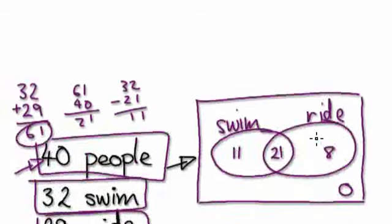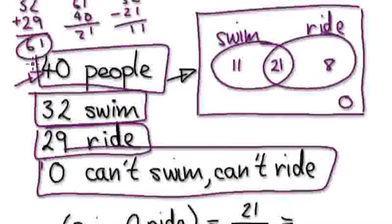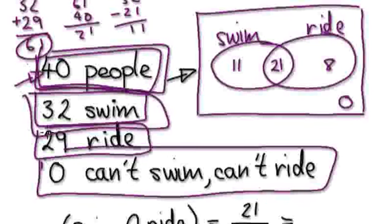In the previous video, I gave you this problem here. 40 people in your class, 32 able to swim, 29 able to ride a bike.